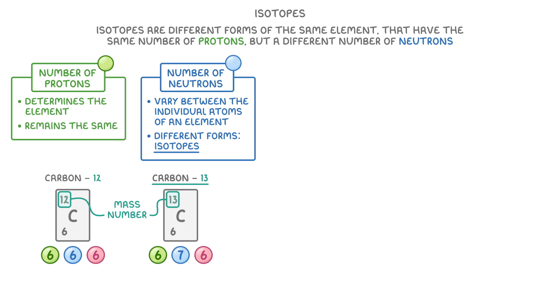Because isotopes only vary in the number of neutrons they have, chemically they all react in basically the same way. Now because they all have different numbers of neutrons, the different isotopes will have different masses.